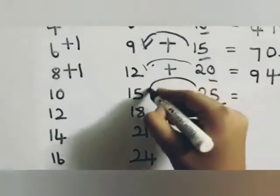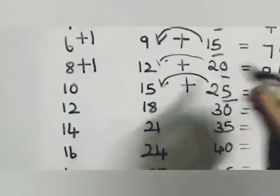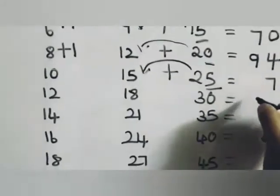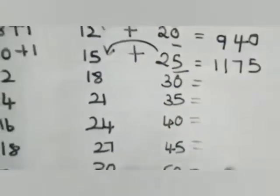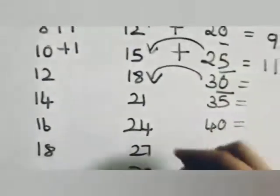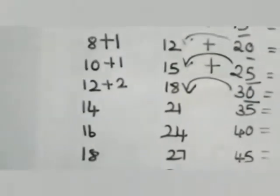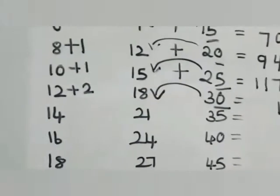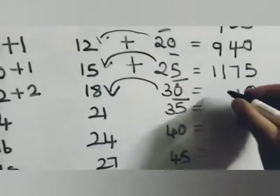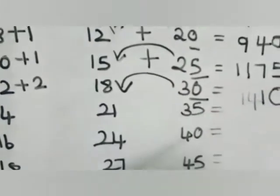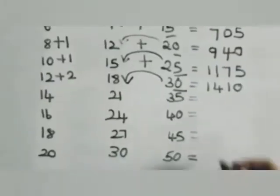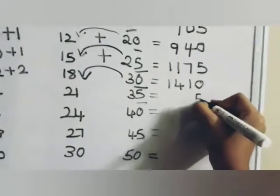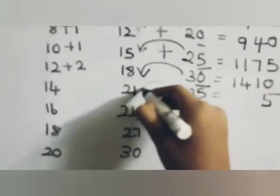Write seven alone here and carry that one, so it will be eleven. Write eleven as such, seven as such. Same way here: write zero, add three to eighteen — twenty-one, write one here, carry two — so it will be one hundred and forty. Then write five here and add three to twenty-one.